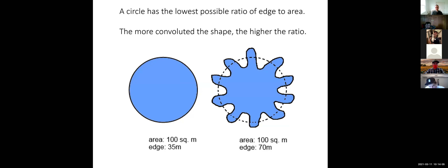Next, we'll look at patch shape and the impact it has on habitat quality. If we look at two different examples of a patch with the same area but two different shapes, we can look at what impact that's going to have on biodiversity and on the quality of that habitat.